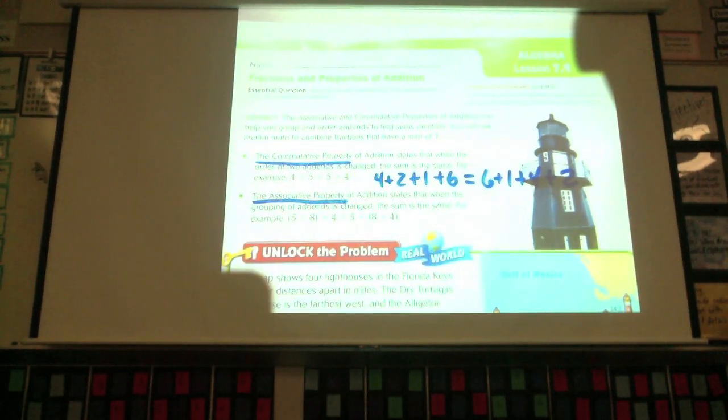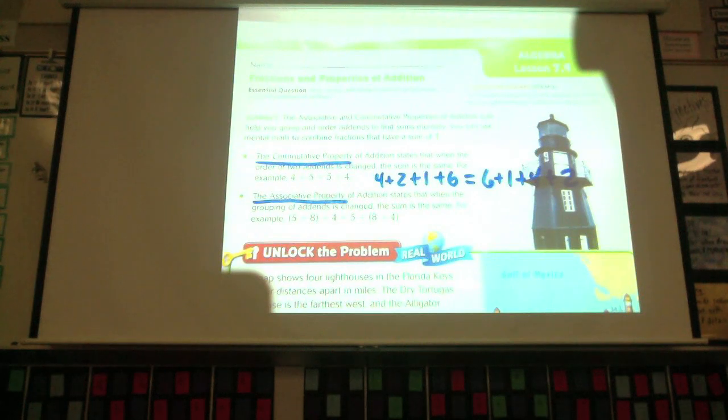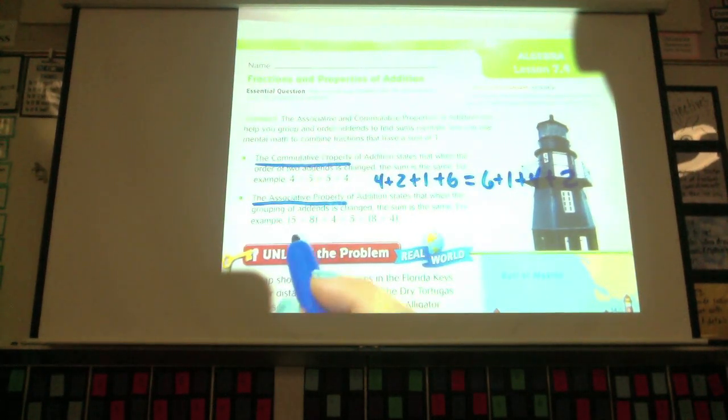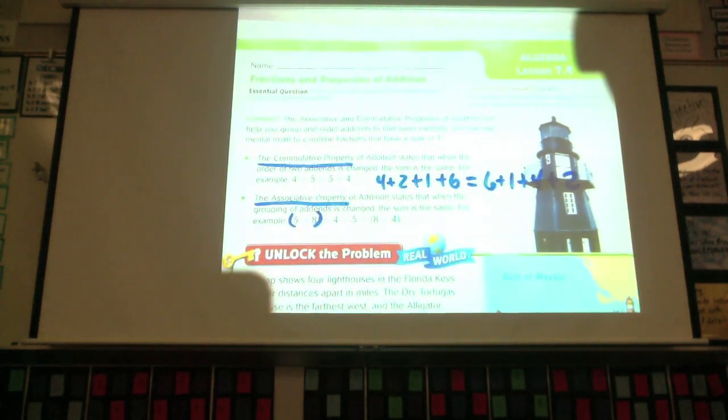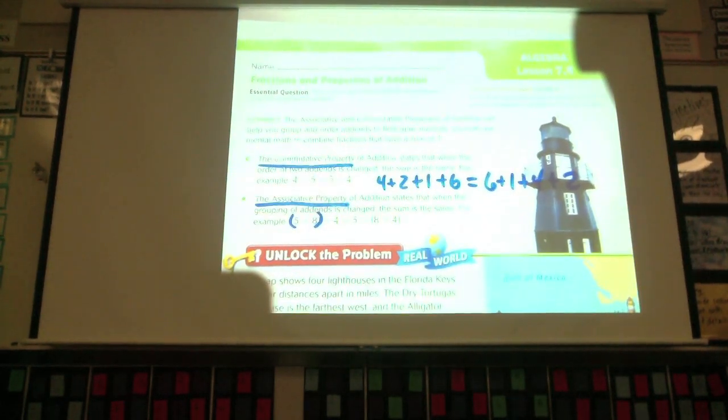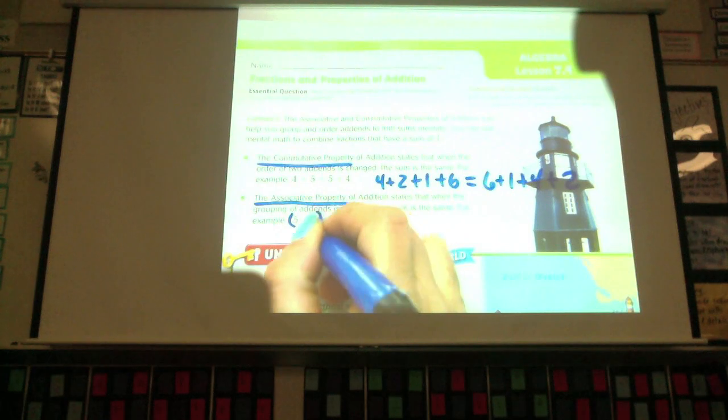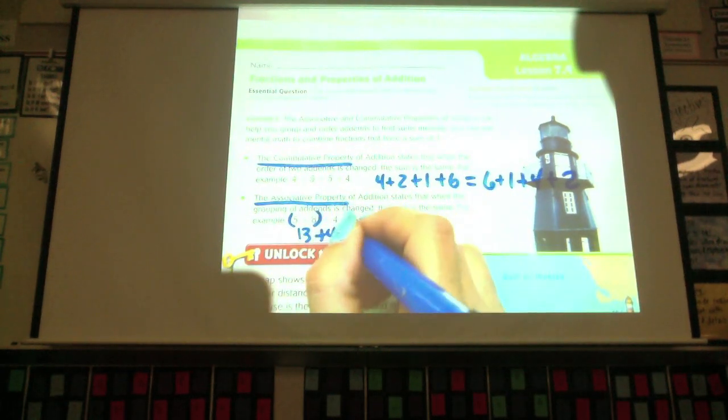All right, the associative property. It's very similar, except now we're referring to how you group them. Remember, parentheses are done first when you're doing math. So it doesn't matter which ones you group together first, it's still going to come out with the same answer. So if I have 5 plus 8 plus 4, I can group the 5, do this adding first, and then add the 4. What am I going to get? Go ahead and do the math real quick. 5 plus 8 was 13, plus the 4 was? 17. 17.